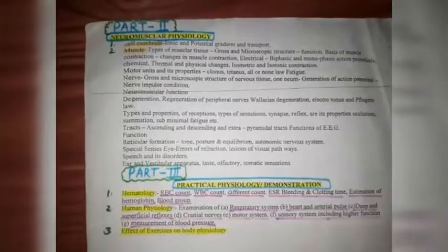Types and properties of receptors, types of sensation, synapse, reflex and its properties, occlusion and summation, subliminal stimuli, fatigue and after-discharge. Ascending and descending and extrapyramidal tract, function of EEG, reticular formation, tone, posture and equilibrium, autonomic nervous system, special senses — eyes, error of refraction, lesion of visual pathway, space and disorders, ear and vestibular apparatus, tests, olfactory, and somatic sensation. This completes Part 2: Neuromuscular Physiology.